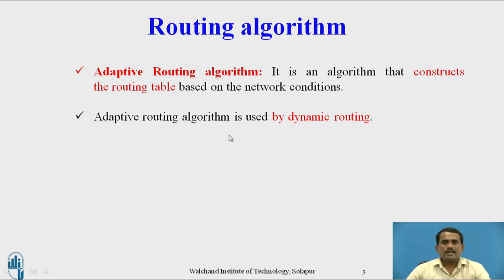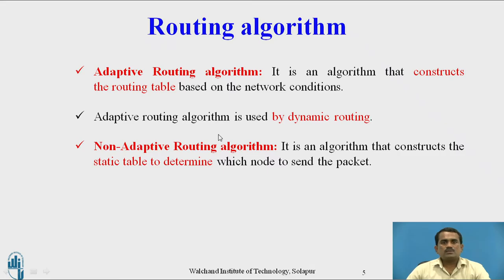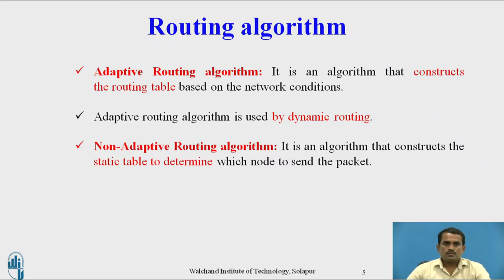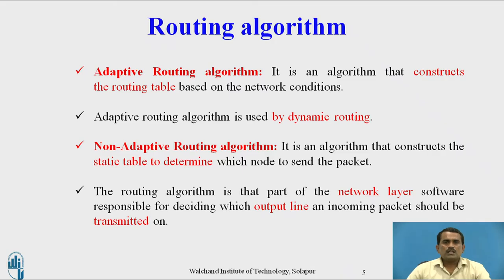Adaptive routing algorithm is used by dynamic routing. Non-adaptive routing algorithm constructs a static table to determine which node to send the packet to. Out of alternate paths, it finds which path safely delivers data to the destination. The routing algorithm is the part of the network layer software responsible for deciding which output line an incoming packet should be transmitted on.